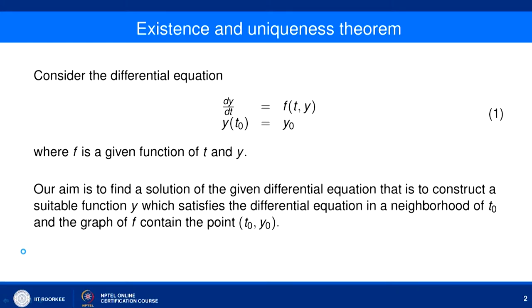Hello friends. Welcome to this lecture. In this lecture, we will discuss the existence and uniqueness theorem for dynamical systems. Consider the differential equation dy/dt = f(t,y) with the initial condition y(t₀) = y₀. Here the function f is a given function of t and y, where t is the independent variable and y is the dependent variable — this is a typical example of a dynamical system.